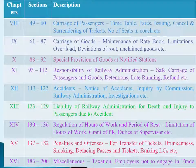Chapter 8: Carriage of Passengers has twelve sections, Sections 49 to 60. In these sections, exhibition of timings and timetables and fares, supply of tickets, cancellation of tickets, refunds, etc. are mentioned.